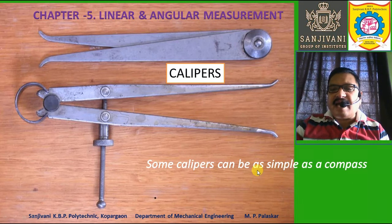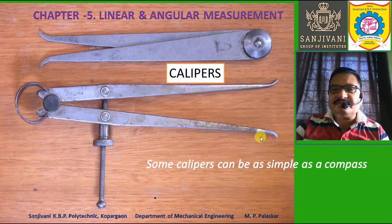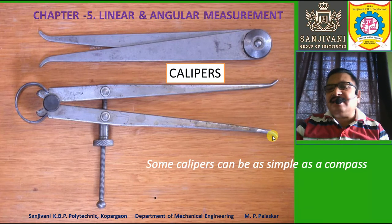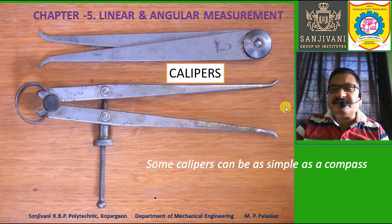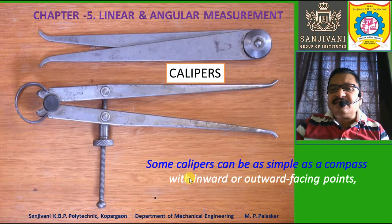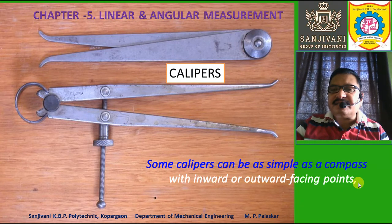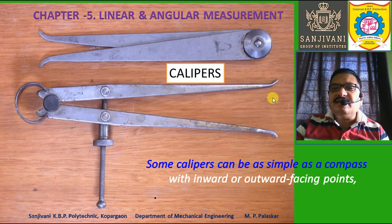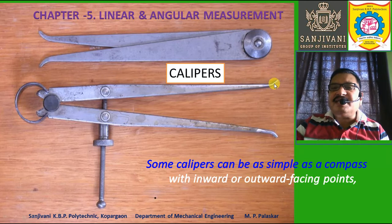Some calipers can be as simple as a compass or a divider. A divider has two pointed ends; a compass has one pointed end and one end holding a pencil. Calipers may have inward or outward facing points. The outward facing points shown here are used to measure inner dimensions.